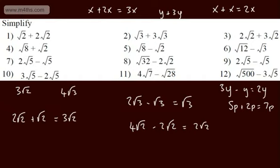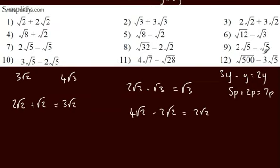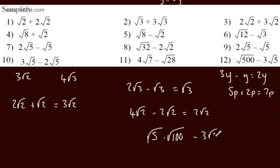That's the basic idea. If you want to make your life easier, you can check on a calculator. Now let's look at 5 root 500 minus 3 root 5. I can write 5 times the root of 5 multiplied by the root of 100, then minus 3 root 5. The square root of 100 is 10, so we have 5 times 10 root 5 minus 3 root 5, which gives us 50 root 5 minus 3 root 5 — wait, we have 10 root 5 minus 3 root 5, giving 7 root 5.